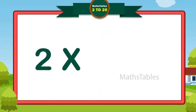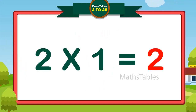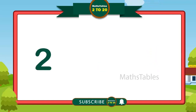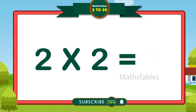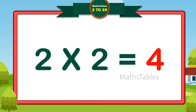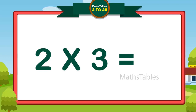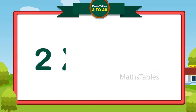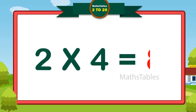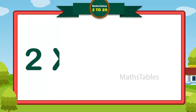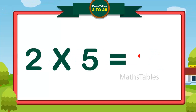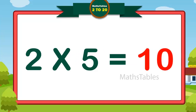Two ones are two. Two twos are four. Two threes are six. Two fours are eight. Two fives are ten.